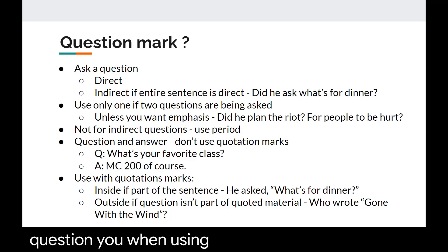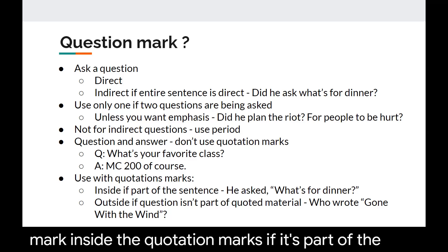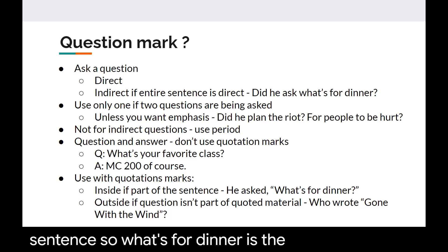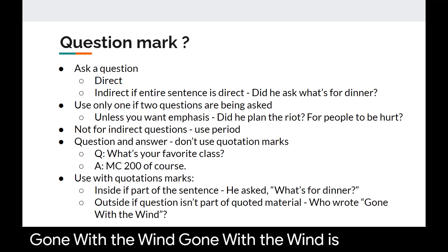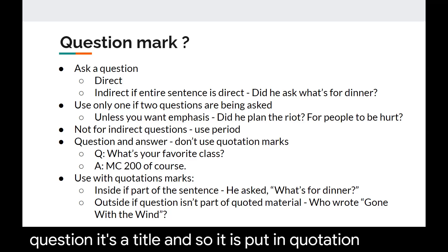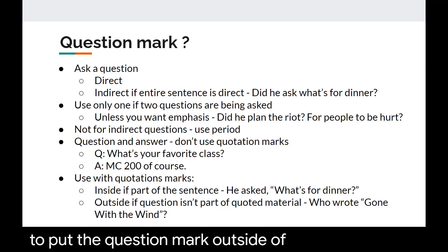When using a question mark with quotation marks you're going to use the question mark inside the quotation marks if it's part of the sentence. So what's for dinner is the quote so therefore it's going to go inside the quotation marks. However if the quoted material isn't actually a question you're going to put the question mark outside of the quotation marks such as who wrote gone with the wind. Gone with the wind is not a question it's a title and so it is put in quotation marks but the question is really who wrote it so you're going to put the question mark outside of those quotation marks.